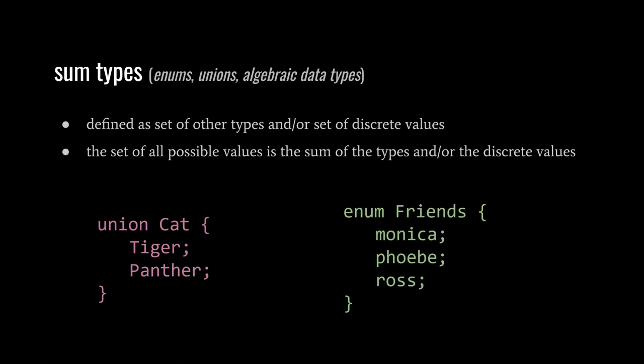For an enum, the set of values are discrete values rather than types. This example enum, called friends, has three discrete values: Monica, Phoebe, and Ross. Commonly, enum values are represented as unique integers or as strings, but it doesn't necessarily matter how these values are represented. All that really matters is that they can be distinguished from each other, so if Monica, Phoebe, and Ross are represented as integers, they must be represented by different integers, for example, 0, 1, and 2.